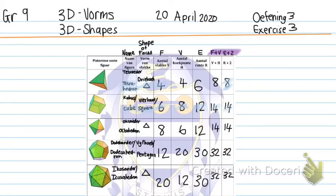Then I have an octahedron. The octahedron has eight faces and all the faces are triangles. It has six vertices and 12 edges. Faces plus vertices gives 14, and edges plus two also gives 14.